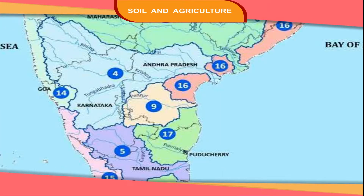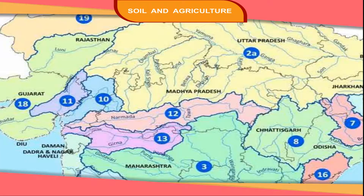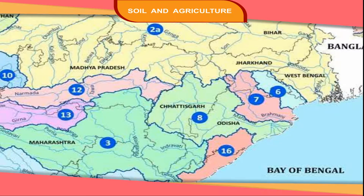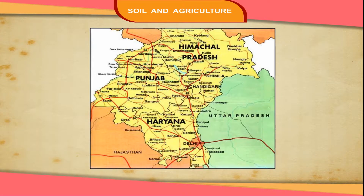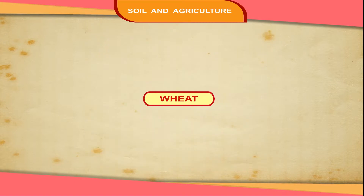Tamil Nadu, Andhra Pradesh, Madhya Pradesh, Chhattisgarh and Jharkhand are the main producers of paddy. Punjab and Haryana are also now growing paddy.